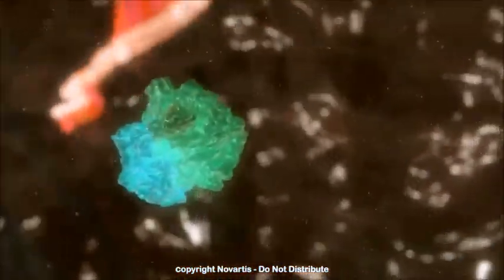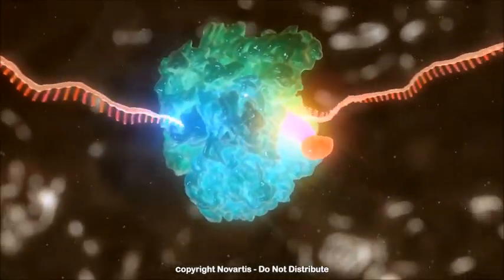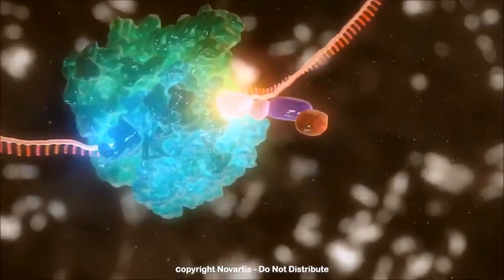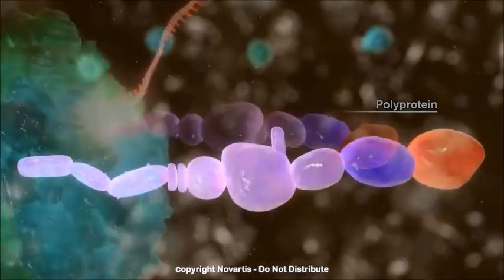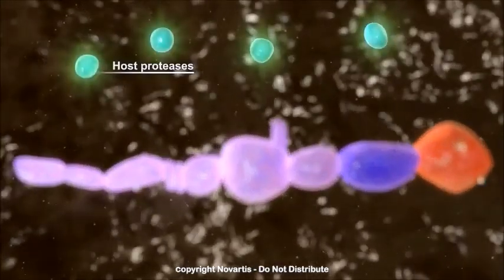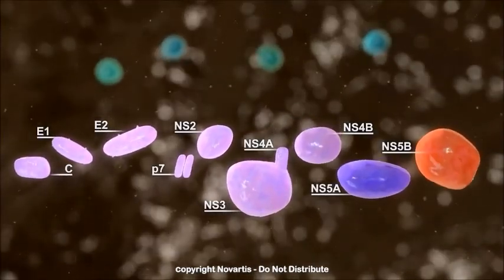HCV utilizes many of the host cell's proteins and molecules in order to replicate. The first step is translation of the viral RNA genome into a polyprotein. The polyprotein is processed by both host cell and viral proteases into structural and non-structural proteins.